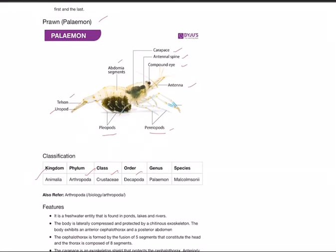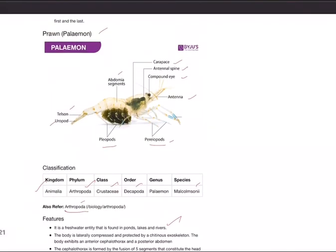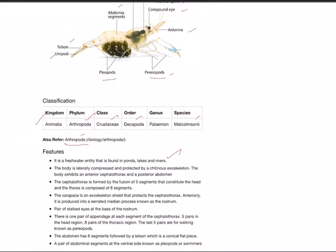Order Decapoda, Genus Palaemon, Species malcolmsonii. Arthropoda is the phylum that has the highest number of animals in the entire animal kingdom. Features: it's a freshwater entity found in ponds, lakes, and rivers. Many people do prawn culture. The body is laterally compressed and protected by a chitinous exoskeleton.